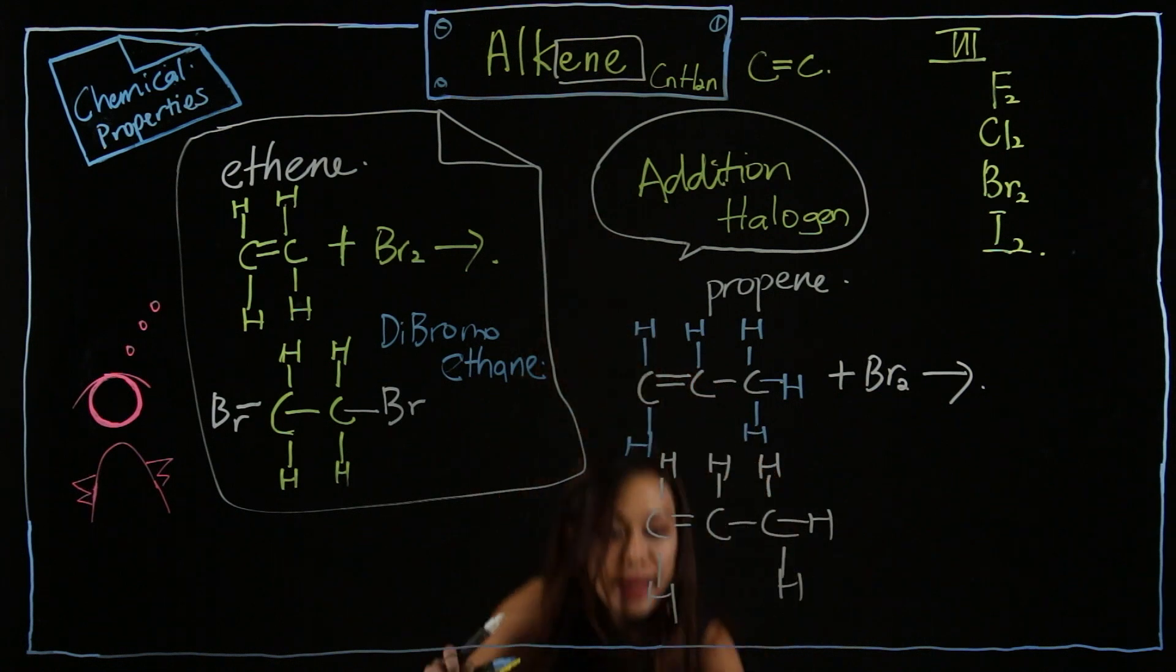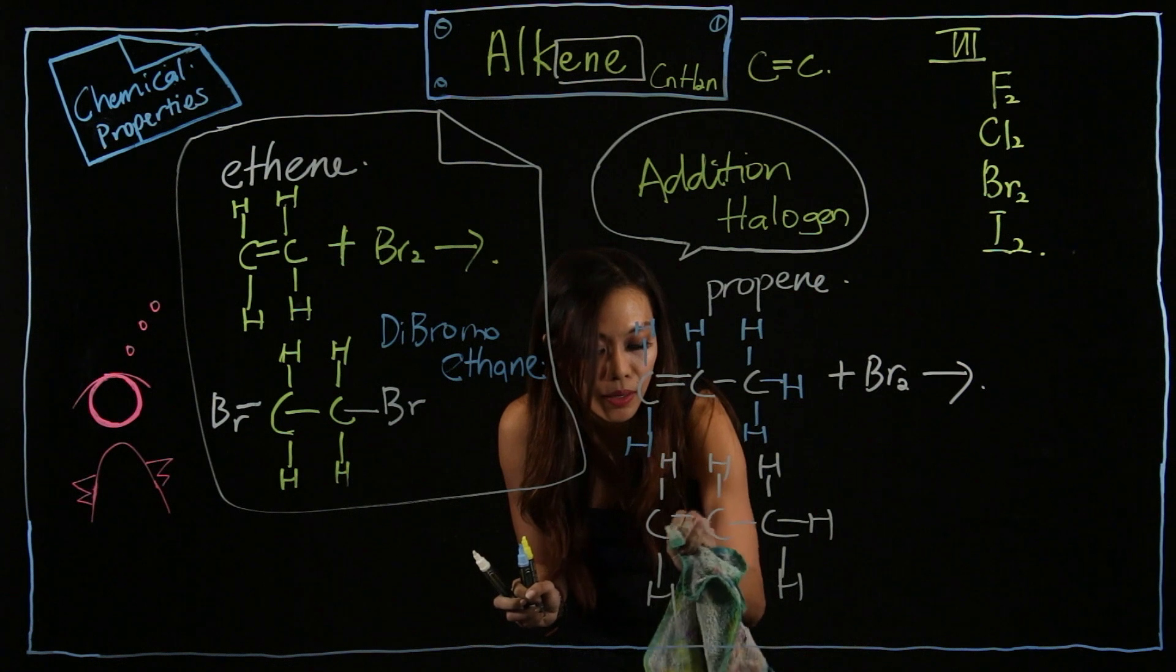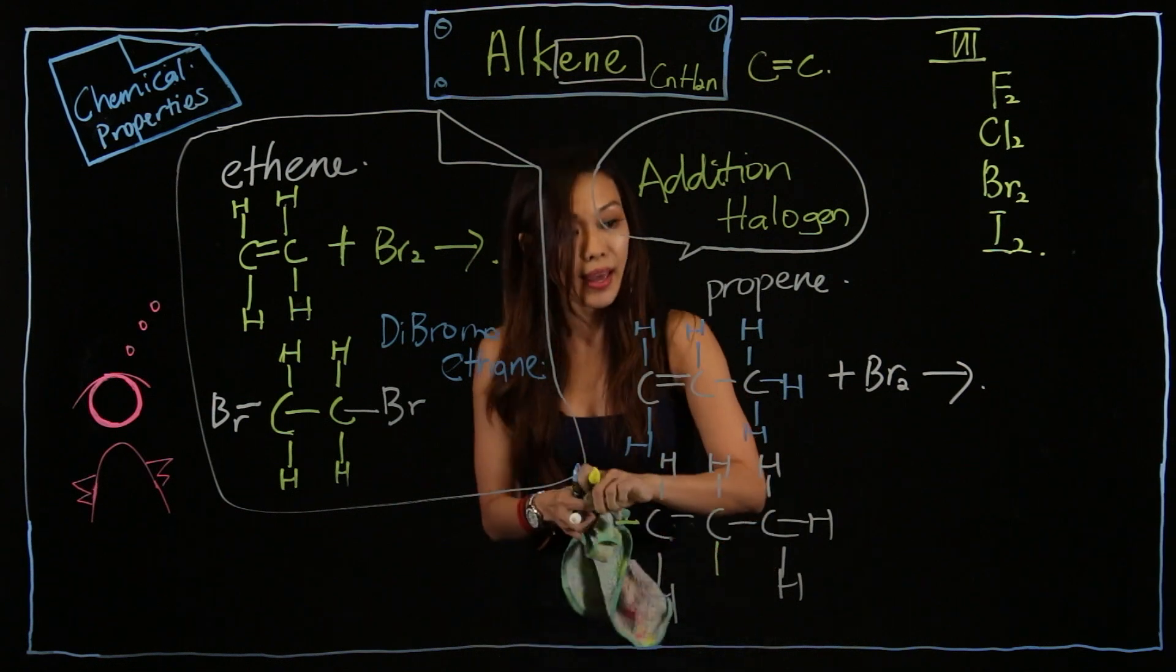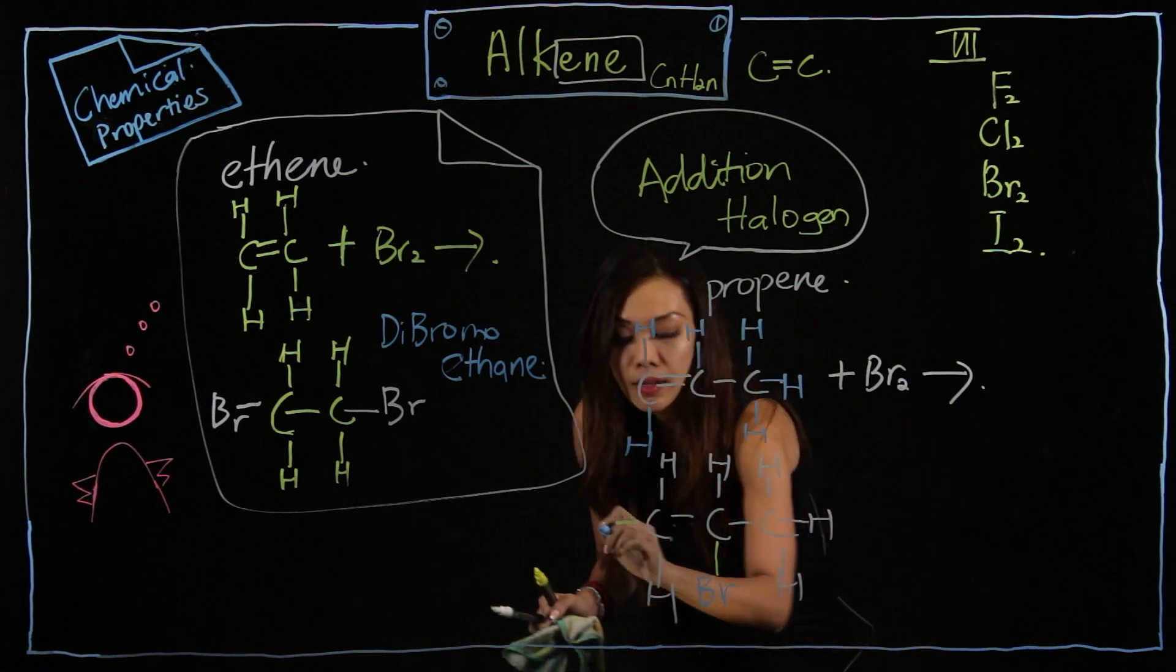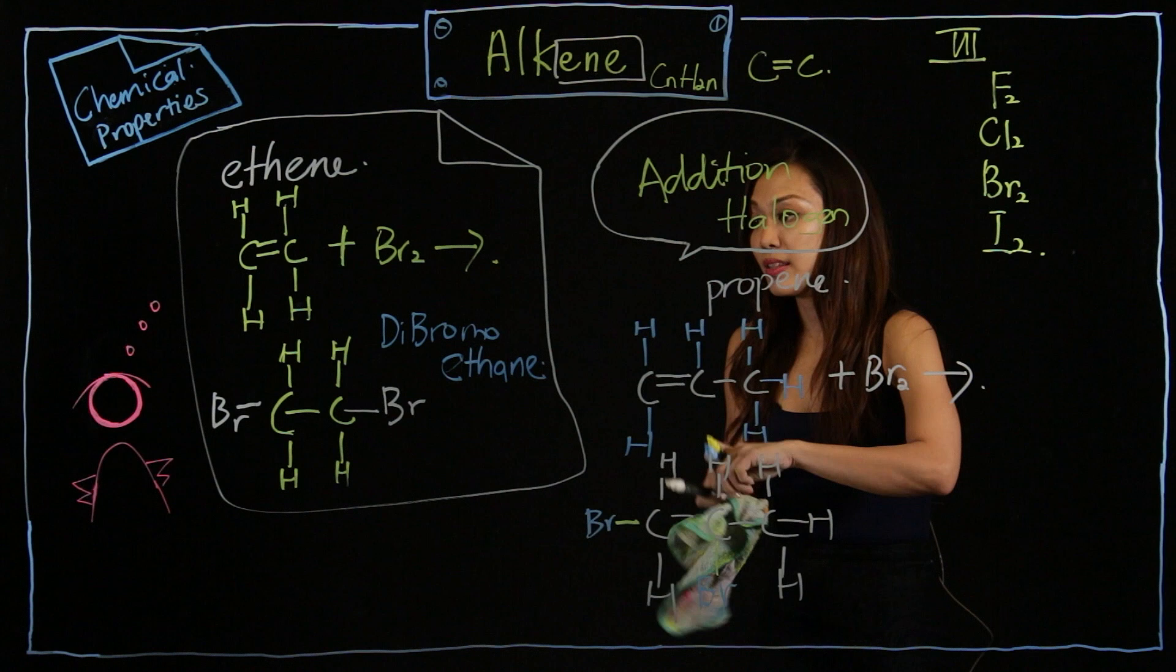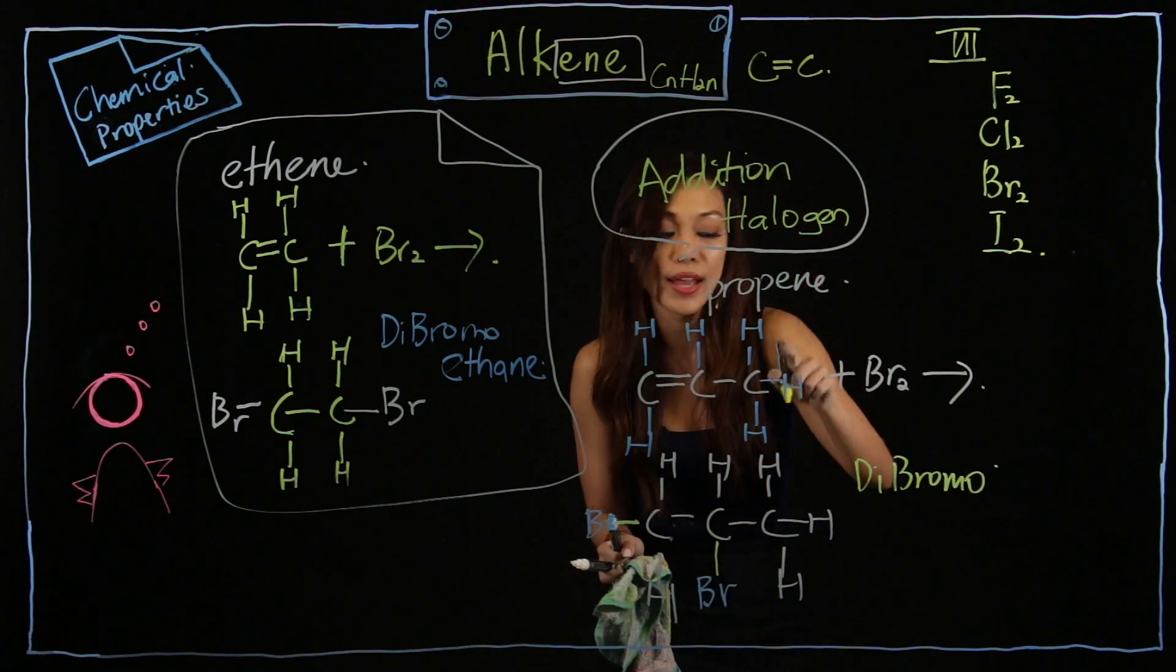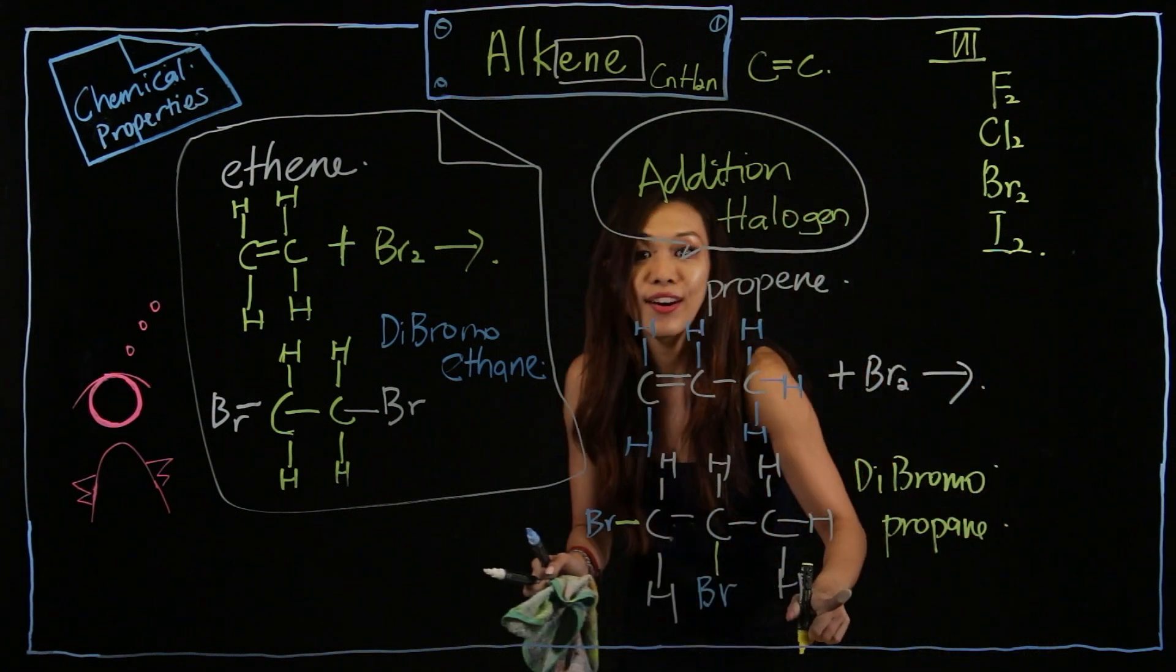So, I'm going to clean the double bond here away. And extend it down one line and another line. And I will insert the Br here. Br. Br. And now I become a what? This is called dibromo. It's not propene anymore. It's propane. Why? Single bond. Okay?